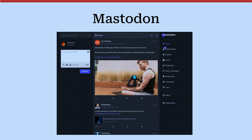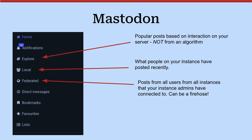Explore is like searching by hashtag. On the left-hand side is where you just write what you want to post. Explore is popular posts based on interaction on your server, not from algorithms — stuff that a lot of people are talking about on the instance you're on right now. It's kind of like the trending section, but it's not coming from an algorithm; it's actual organic interactions.